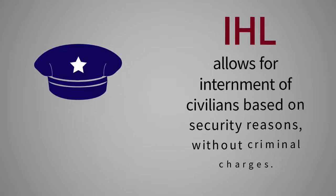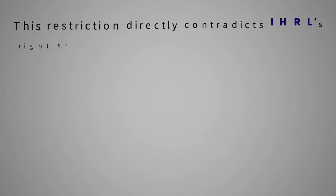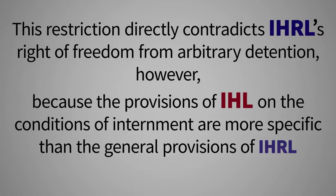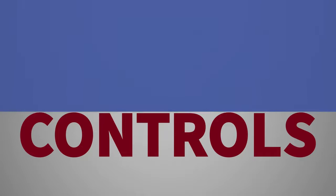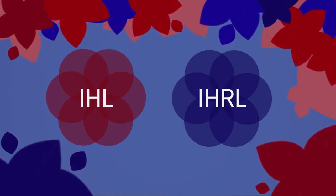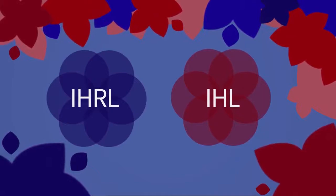For example, in certain security situations in an armed conflict, IHL allows for internment of civilians based on security reasons without criminal charges. This restriction directly contradicts IHRL's right of freedom from arbitrary detention. However, because the provisions of IHL on the conditions of internment are more specific than the general provisions of IHRL granting freedom from arbitrary detention, IHL controls, and provided the requirements of the provisions of IHL are met, the person can be interned. Despite sharing similar sounding names and working towards a common goal of protecting individuals, international human rights law and international humanitarian law remain separate but linked and overlapping bodies of international law, each working in their own way towards ensuring human dignity in both peace and armed conflict.